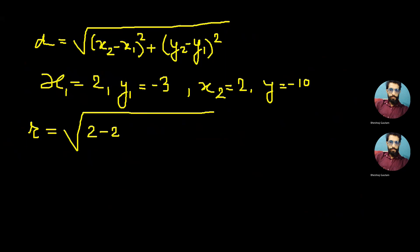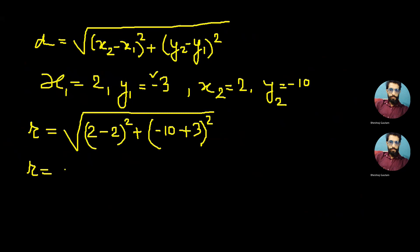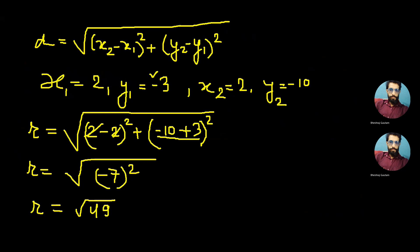Putting these values into the distance formula, we get r = √[(2 - 2)² + (-10 - (-3))²] = √[0² + (-10 + 3)²] = √[(-7)²] = √49, so r = 7 units.